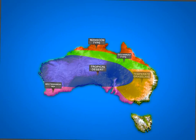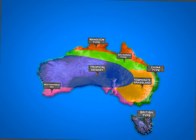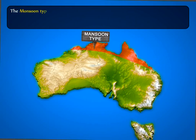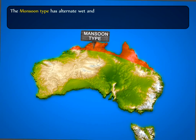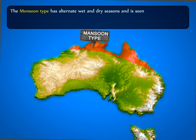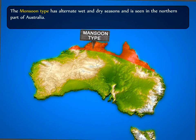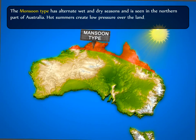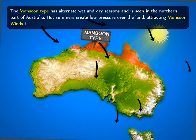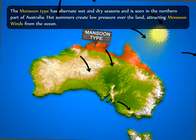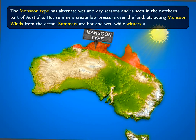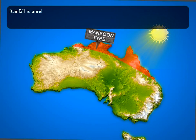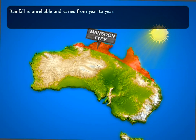Australia has seven types of climatic regions and their respective vegetations. The monsoon type has alternate wet and dry seasons and is seen in the northern part of Australia. Hot summers create low pressure over the land, attracting monsoon winds from the ocean. Summers are hot and wet while winters are cold and dry. Rainfall is unreliable and varies from year to year.